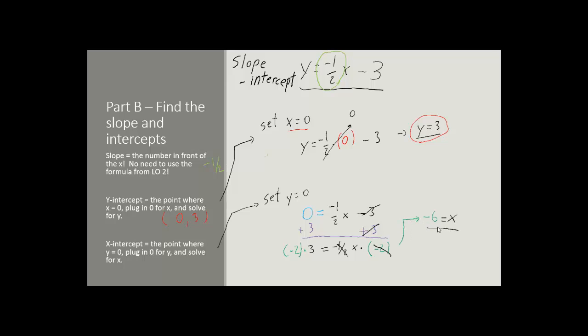Now once again we don't simply write that number as our answer. We must write it as a coordinate. So we can't write just negative 6. Instead we write the x number and then the y number. So our x is negative 6 that's what we just found and our y is that what we set to 0. So our slope is negative 1 half, our y intercept is 0, 3, and our x intercept is negative 6, 0.